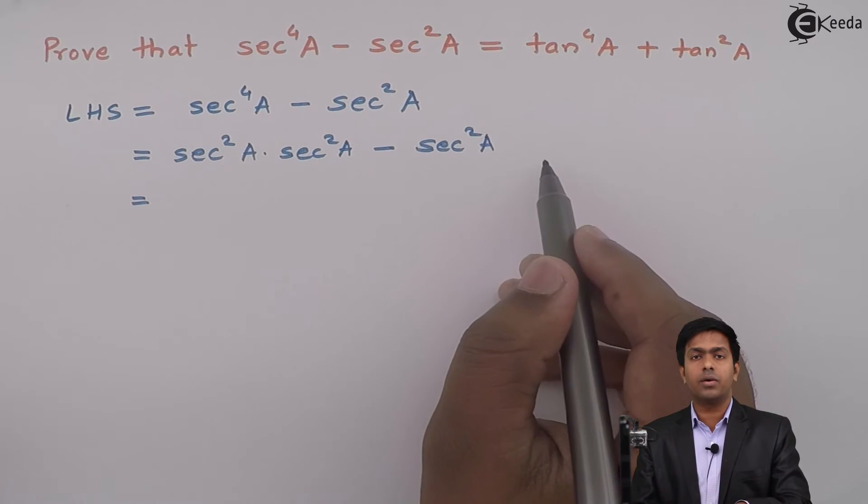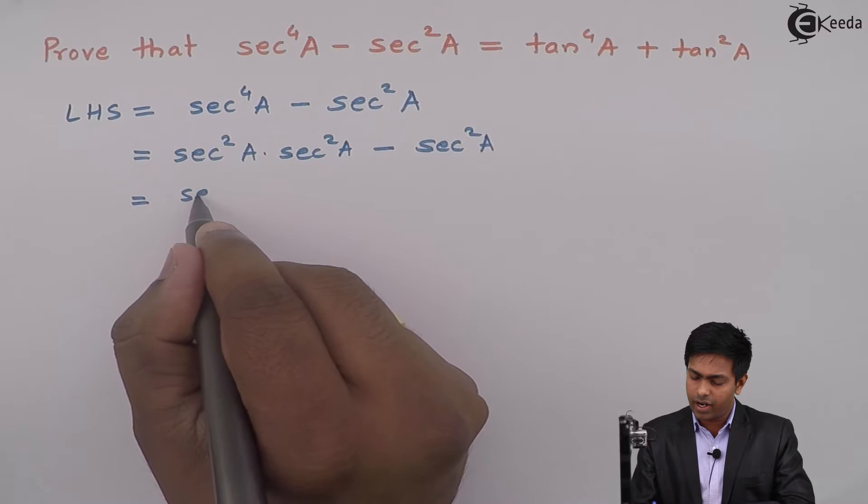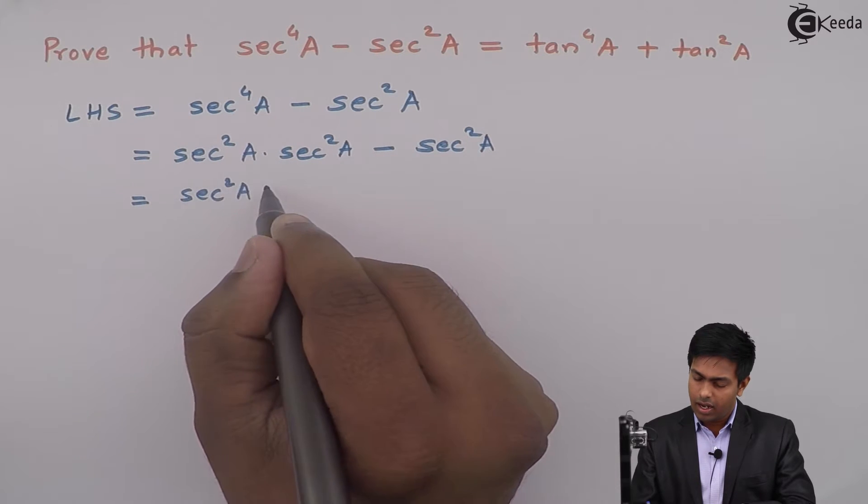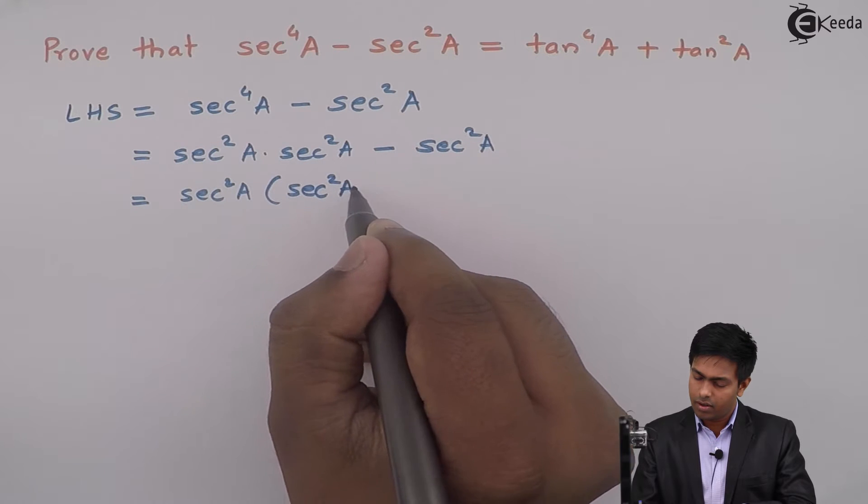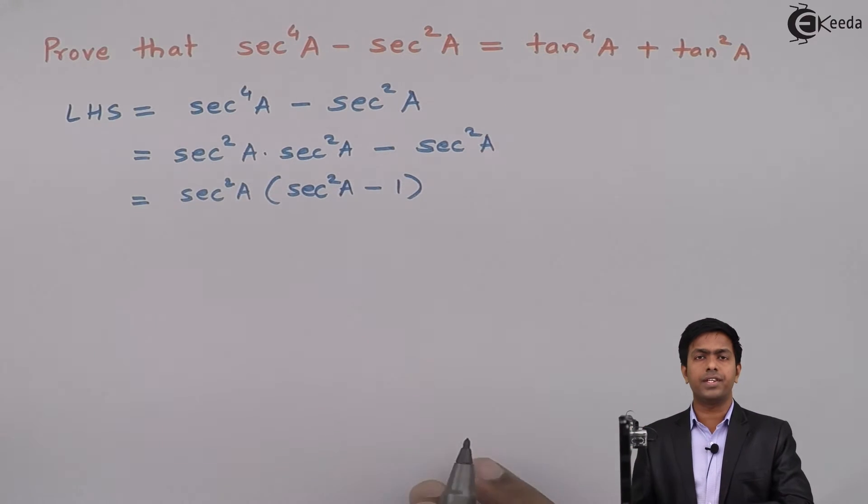Now from these two terms we can take sec square A outside, and in the bracket from the first term we will get sec square A minus 1 from the second term.